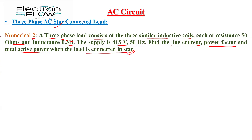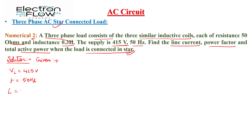Let us start the solution. The given parameters are: line voltage is 415 volts, frequency is 50 hertz, inductance is 0.3 Henry, and resistance of the coil is 50 ohms.